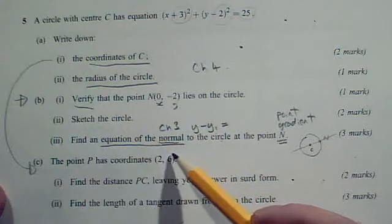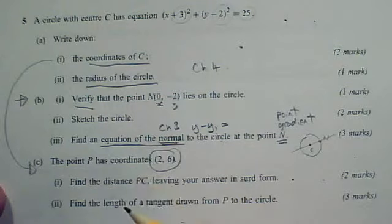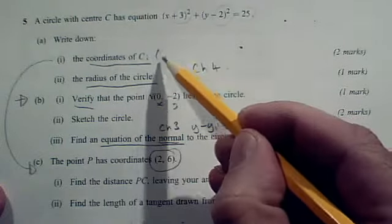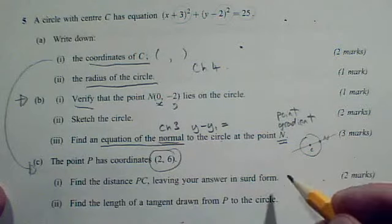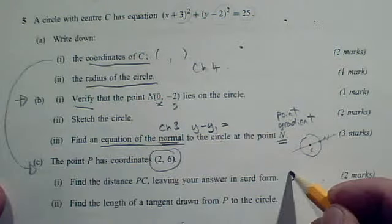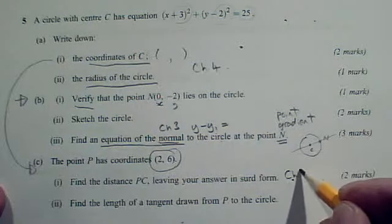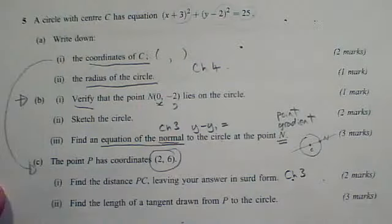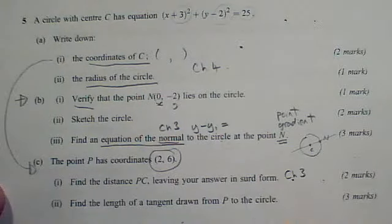We've got to find the distance between the point P and the coordinates of C, leaving your answer in surd form. This is the distance method from chapter 3. Apply that to two sets of coordinates and simplify your answer in surd form.